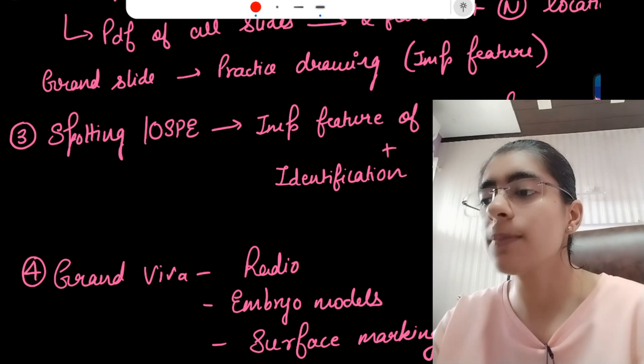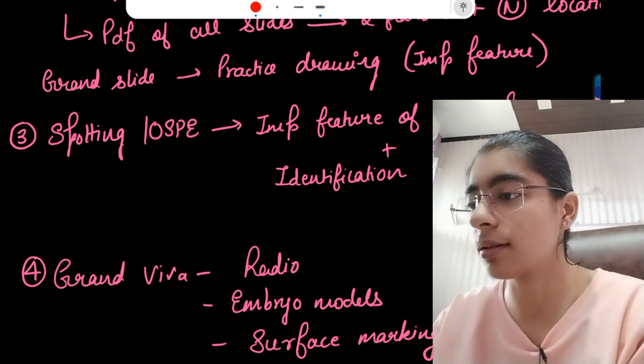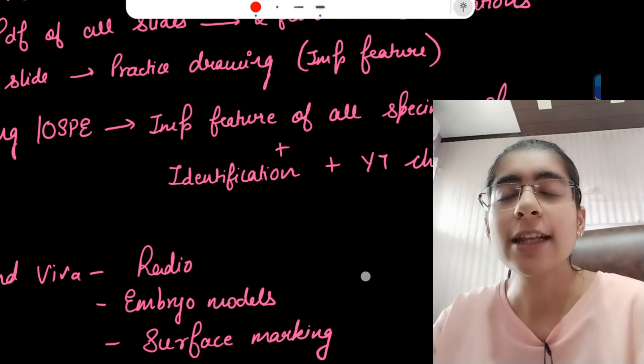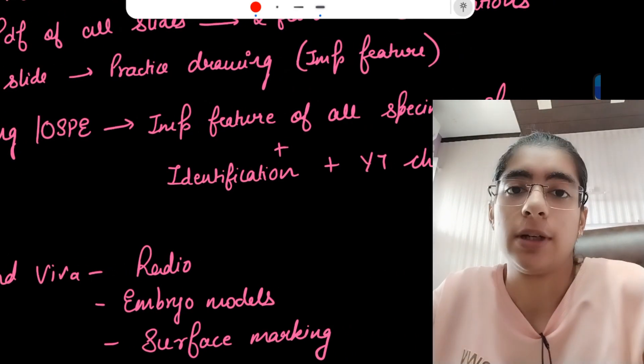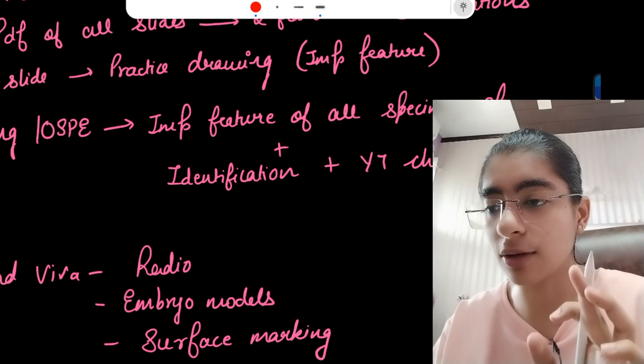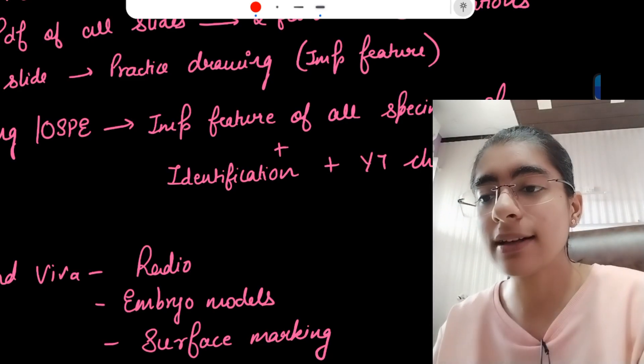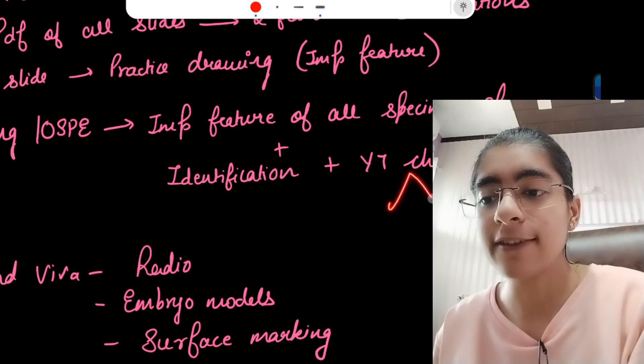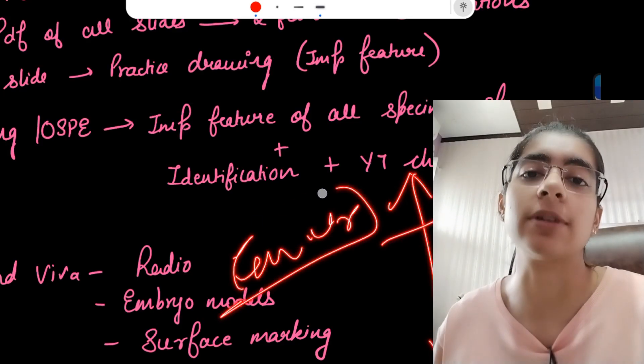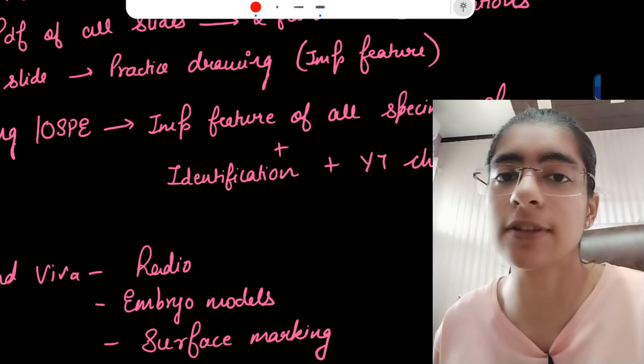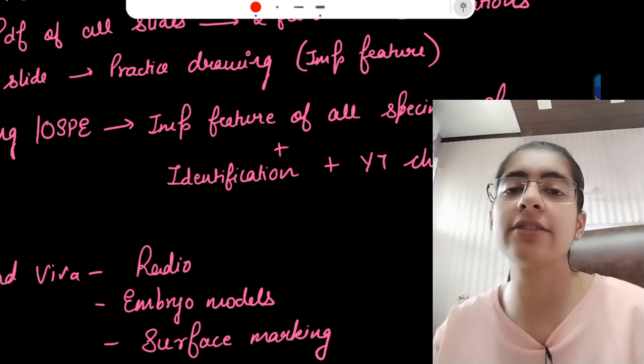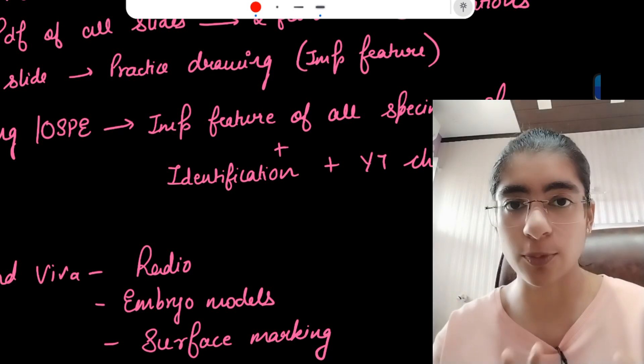In gross anatomy spotting or OSPE, sometimes you are confused what will come in the spotting, but you can predict. You can make a list of all the bones. If it is femur, then you can write what are the important features of the femur and what are the muscle attachments. You can make a small notebook and write one page femur, then one page next bone.